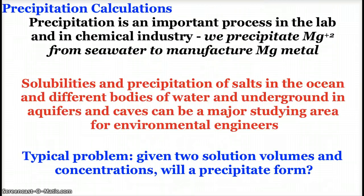These precipitation calculations are very important in the lab, and in chemical industry, for example, ocean water is filled with magnesium ions, so we can precipitate them out in order to manufacture magnesium metal, that lovely ribbon of metal that we burn in lab, but don't look at the flame because it's really bright, but we can't help ourselves.